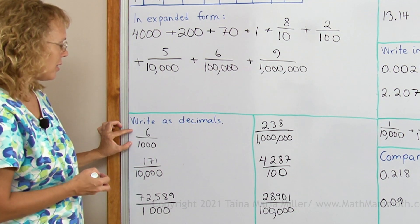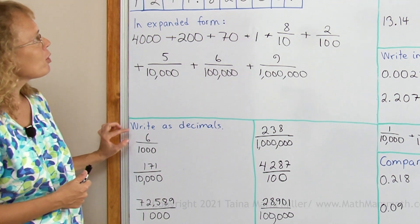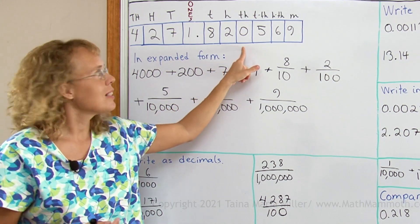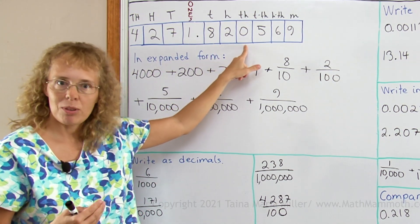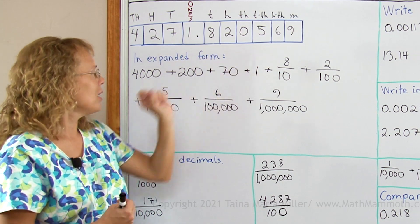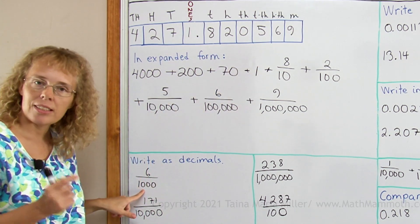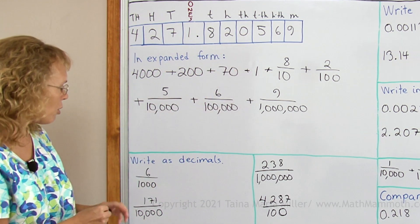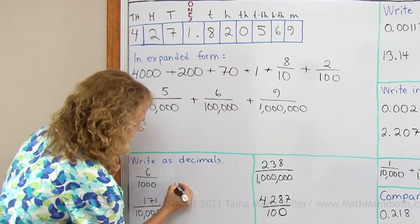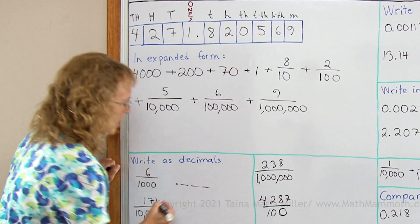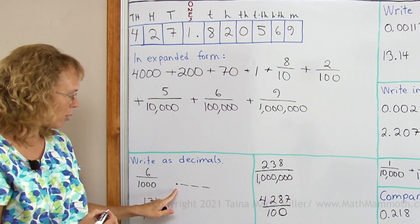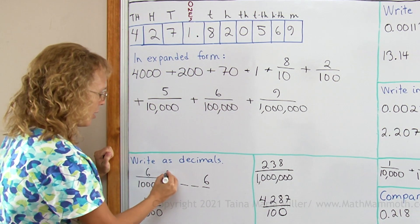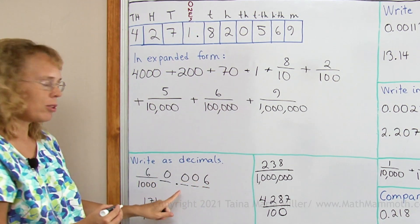Six thousandths as a decimal. If you notice, whenever a decimal has thousandths, then it must have three decimal digits — just like the number thousand has three zeros, we have three decimal digits. So all I need to do is write a decimal that has three decimal digits after the point and put six at the last place. So I just put zeros in, and it is 0.006.